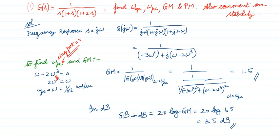Then I find the gain margin, which is 1/magnitude. The magnitude is the square root of (real part)² + (imaginary part)². Substituting ω_pc = 1/√2, I get the magnitude as 1/1.5, so the gain margin is 1.5.